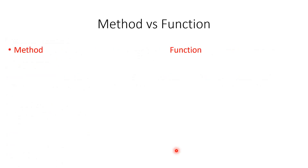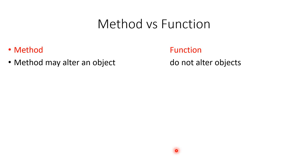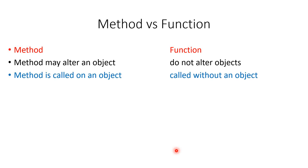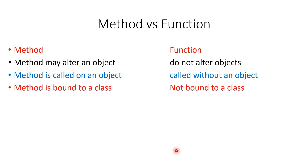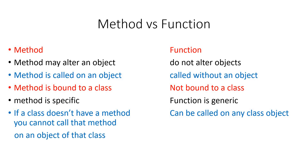Now let's compare methods with functions. If you use a method on an object, for example inserting a number in a list, that object is modified and will contain the inserted number. But a function just gives you the output without modifying the object itself. Another difference is that a method is called on an object while a function is called without an object. Method is bound to a class while function is not. Method is specific while function is generic — if a class doesn't have a method you cannot call that method on its object, but a function can be called on any object of any class.